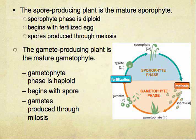The spore-producing plant is the mature sporophyte. The sporophyte phase is diploid, meaning it has two N's. To remember diploid: the zygote is diploid, but the spores, gametophyte, and other stages are haploid — they're just one N.